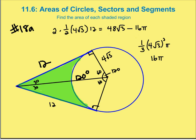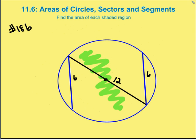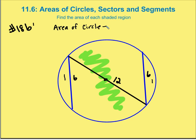Let's move on to part B of this question. In 18B, what we're trying to figure out is the area of this region — the entire circle minus the two segments. So we're going to find the area of the entire circle and then subtract the area of the two segments.